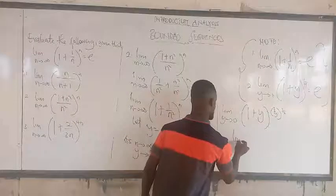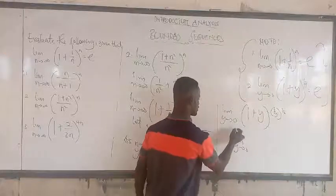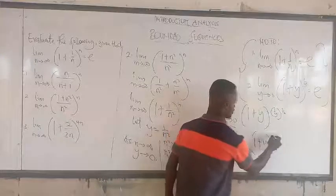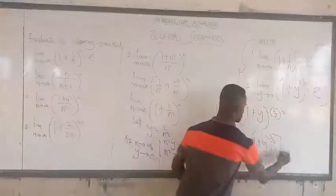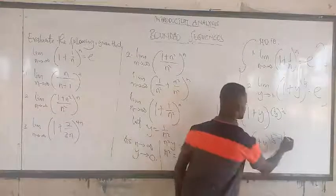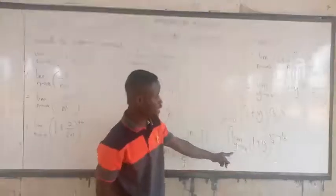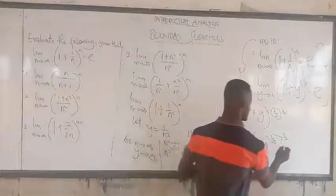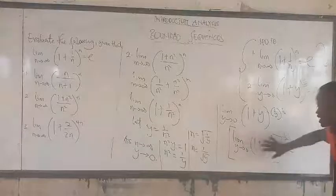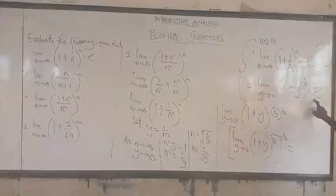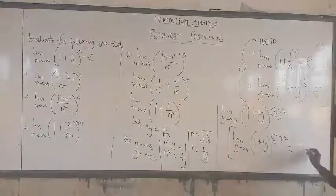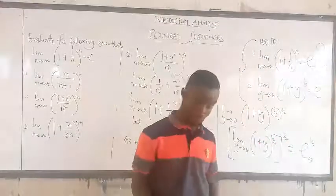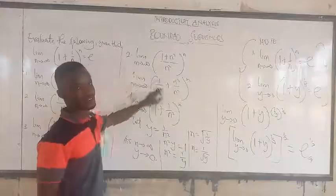We can write the limit as y approaching 0 of 1 plus y to the power 1 over y, and then factor out the power, which is 2 — so we get the inside raised to the power 1 over y, all raised to the power one half. The inside limit as y approaches 0 of 1 plus y to the 1 over y is e, so we get e raised to the power one half. That is the value for this sequence.